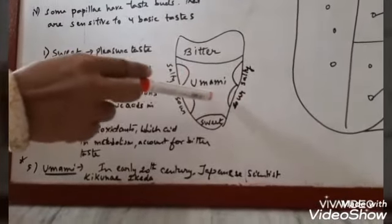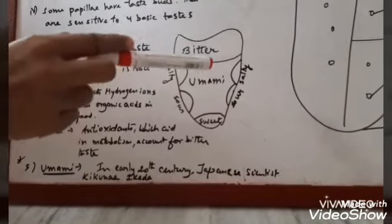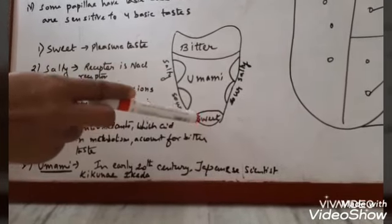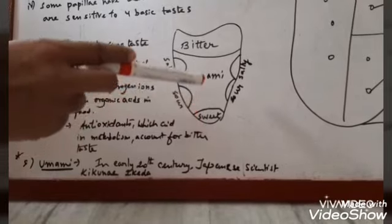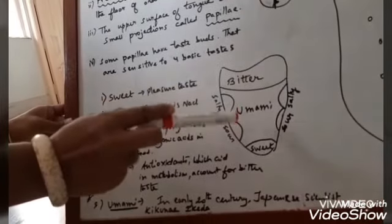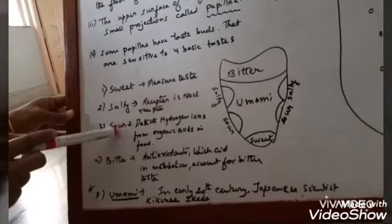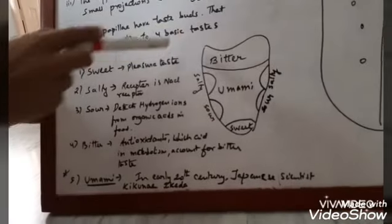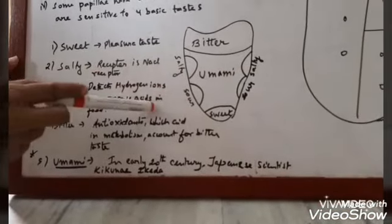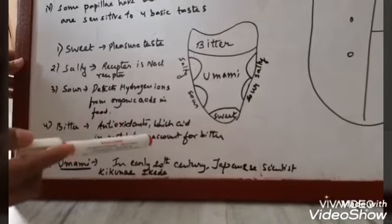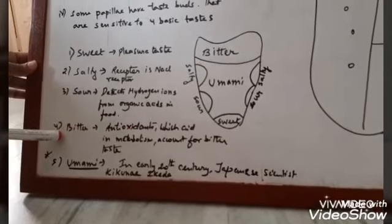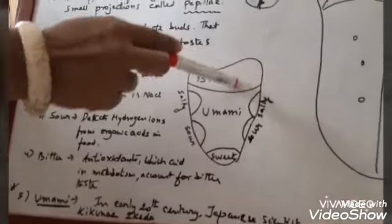Next is sour taste. All the organic acids present in our foods and vegetables give a sour taste. The papillae detect the hydrogen ion from the organic acids in the food, which are generally citrus fruits and vegetables.